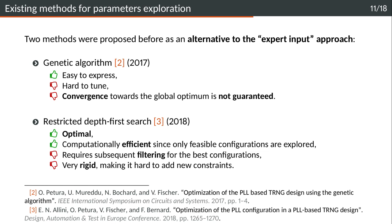This expert input approach was questioned first in 2017, where the authors proposed to use a genetic algorithm. The advantage of this algorithm is that it's easy to express, but on the other hand it's hard to tune correctly and get good results. Moreover, there's no guarantee that the algorithm will converge towards the global optimum.